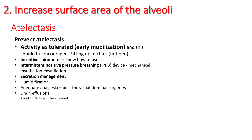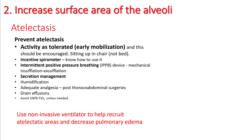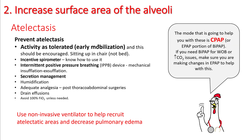Make sure you provide adequate analgesia for post-op thoracoabdominal surgeries. If there are effusions, drain them. Try to avoid using 100% FiO2 unless absolutely needed. You can also use non-invasive ventilation to help recruit atelectatic areas and decrease pulmonary edema. Understand that it's the expiratory PAP or CPAP that helps with recruitment, so make sure these numbers are high enough to prevent atelectasis.